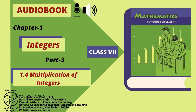From the above products, we observe that: a. The product of two negative integers is a positive integer. b. The product of three negative integers is a negative integer. c. The product of four negative integers is a positive integer. What is the product of five negative integers in D? So what will be the product of six negative integers?